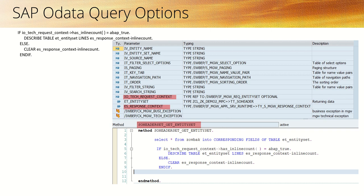When we pass in the URL `$inlinecount=allpages`, in the entity set method we first need to read from `io_tech_request_context` whether $inlinecount is true or not — meaning whether it was requested by the URL. If it is requested, then in the exporting parameter `es_response_context` there is a field called inline count. We simply need to describe the internal table lines into inline count. If inline count is false, we just clear that inline count field.